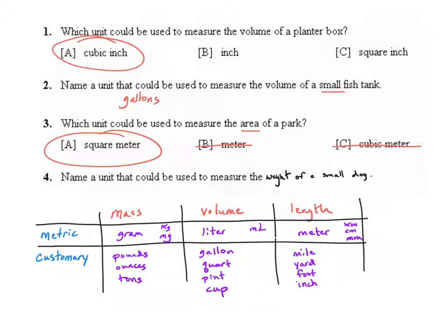Question four says name a unit that could be used to measure the weight of a small dog. Remember that weight and mass on earth are equivalent so when we're looking for the weight of a small dog it's not going to make sense for it to be in grams or milligrams or ounces or even tons, so really our only two choices are pounds, probably less than 10 pounds, or kilograms. A kilogram is equivalent to approximately 2.2 pounds so it would be even less than that, maybe four or five kilograms.